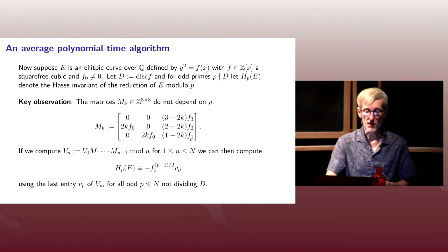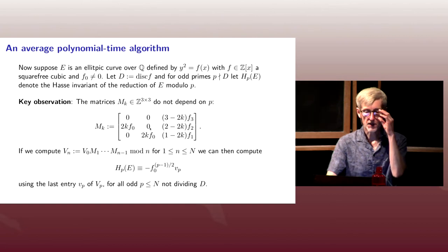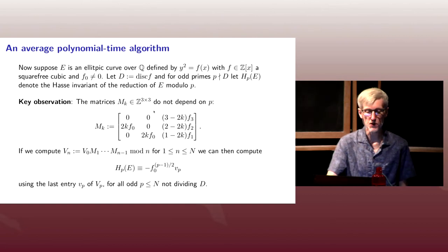And now we're going to take advantage of the fact that we set up our linear recurrence relation matrix M sub K so that its entries don't depend on P. So this matrix makes perfect sense over Z. If the coefficients of F are in Z, this matrix will live in Z.